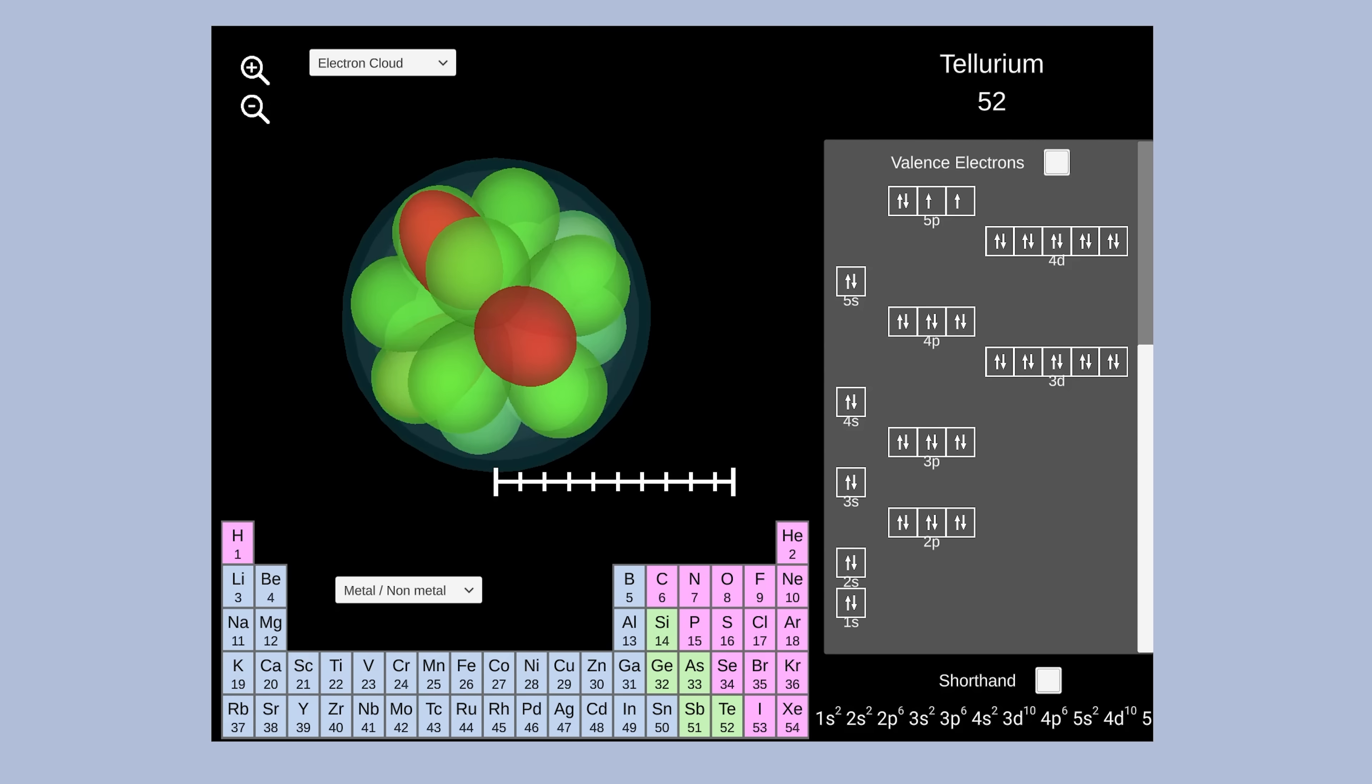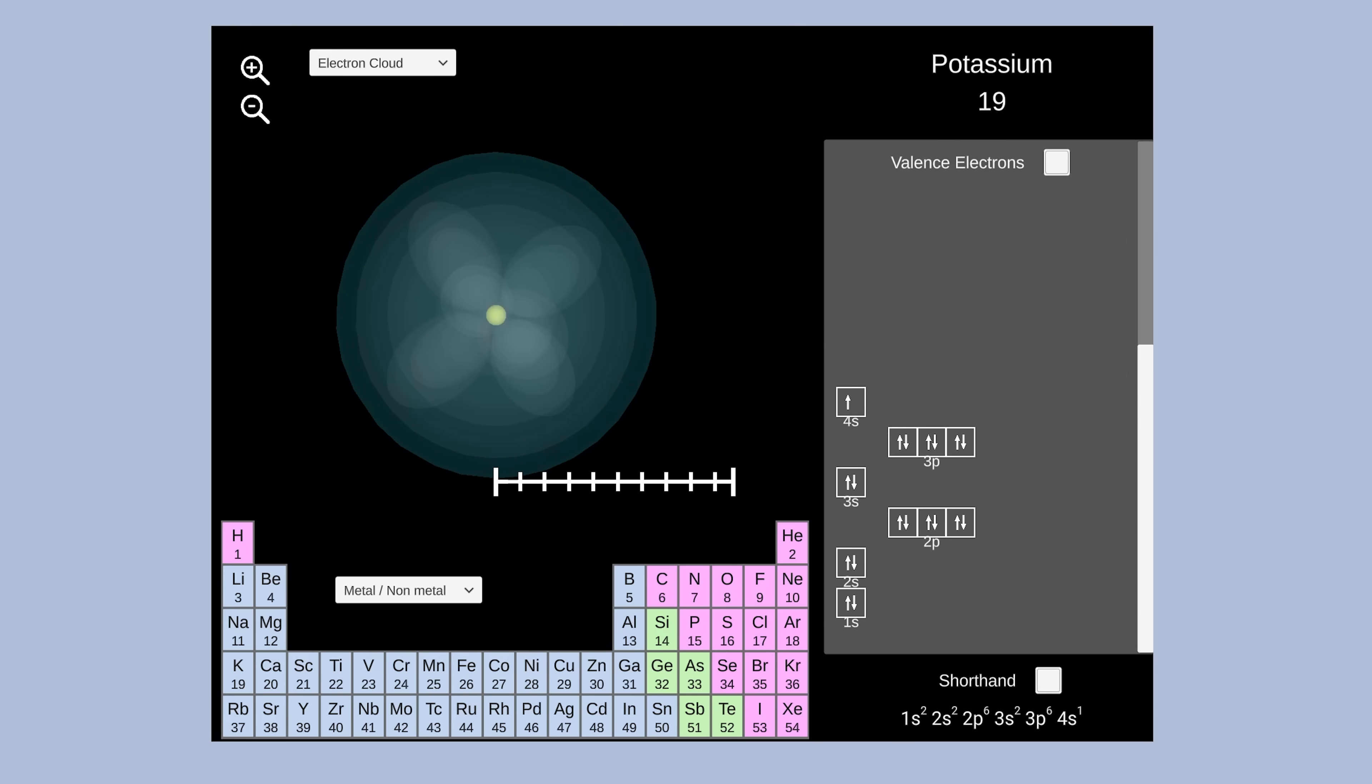Electron spin turned out to be one of the most important discoveries in physics and chemistry. It explained how electrons fill atomic orbitals and why atoms bond the way they do.